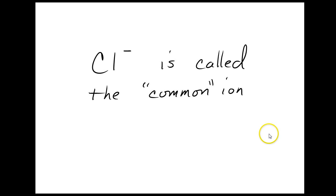Cl minus is called the common ion in this problem, and the way that it affects the solution of AgCl is called the common ion effect.